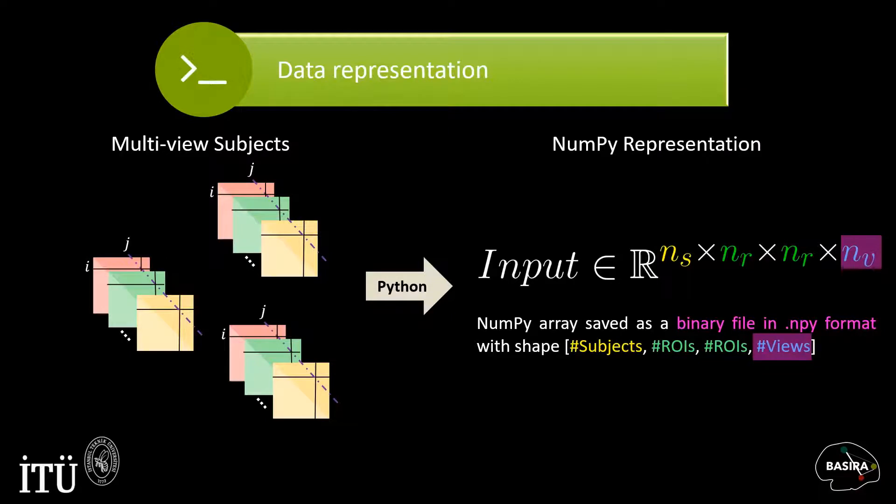We experimented on multi-view graphs, but our implementation works on single-view graphs too. You can simply set the fourth dimension to one for single-view input. The only constraint is that the input network should be undirected. In other words, adjacency matrices should be symmetrical.